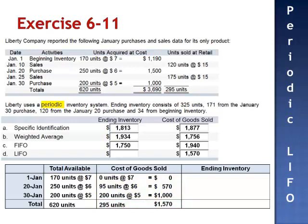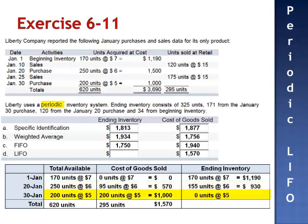This leaves 325 units in ending inventory: 170 units from beginning inventory at $7 per unit, totaling $1,190, and the remaining 155 units from the January 20th purchase at $6 per unit, totaling $930. None of the units from January 30th are still in ending inventory. The value of the 325 units in ending inventory is $2,120.